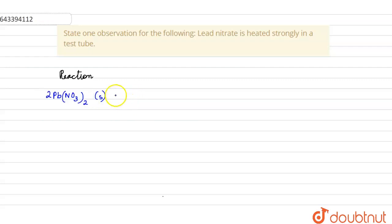Now this is a solid. When this is heated—this is the symbol for heat—we get 2PbO, that is lead oxide, plus 4NO2, nitrogen dioxide, plus O2.